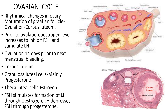The ovarian cycle is of 28 days on average, during which rhythmical changes occur in the ovary. The primordial follicle is converted to a primary follicle. Then cavities appear and form a large antrum folliculi filled with liquor folliculi. The secondary follicle is converted to a mature Graafian follicle which, on rupturing, releases the oocyte, and the remaining part forms the corpus luteum.